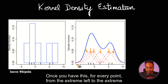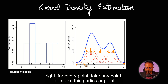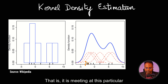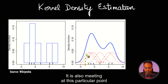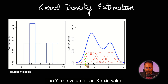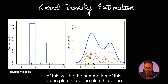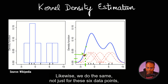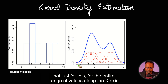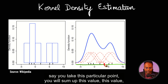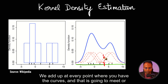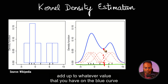Once you have this, for every point from the extreme left to the extreme right, take any point — let's take this particular point. For every point, we will add up the values of Gaussian kernels. It is meeting at this particular point, it is also meeting at this particular point, it is also meeting at this particular point. So the y-axis value for an x-axis value of this will be the summation of this value plus this value plus this value. You add up all these three and it is going to meet somewhere over here. Likewise, we do the same not just for these six data points but for the entire range of values along the x-axis. For each point along the x-axis, you will sum up the values of all six curves, and that is going to add up to whatever value that you have on the blue curve.